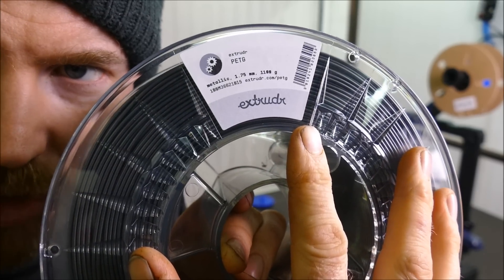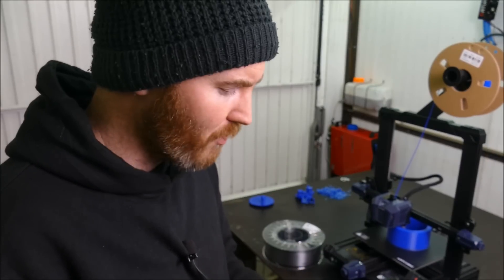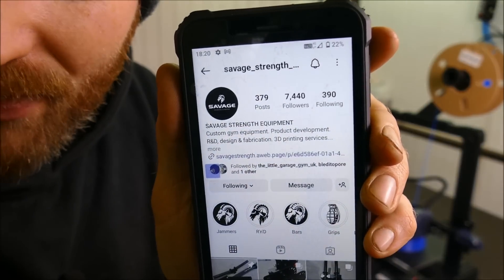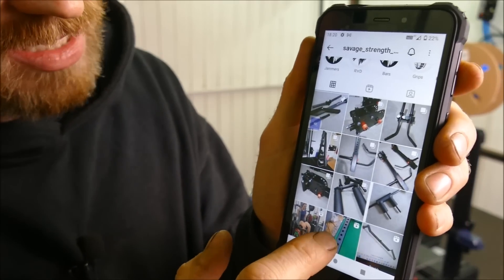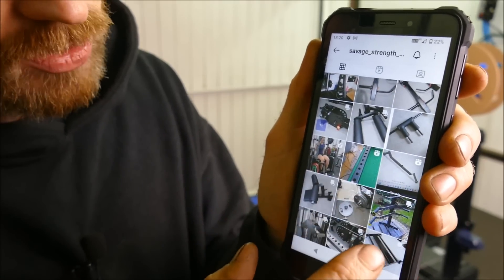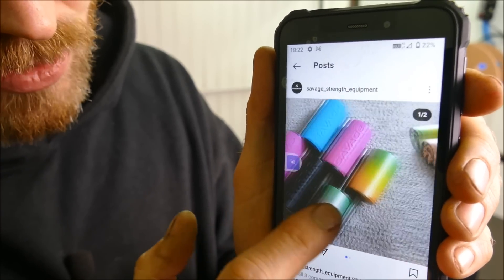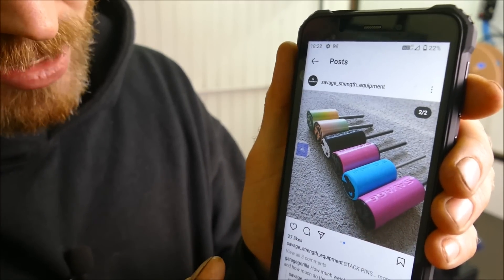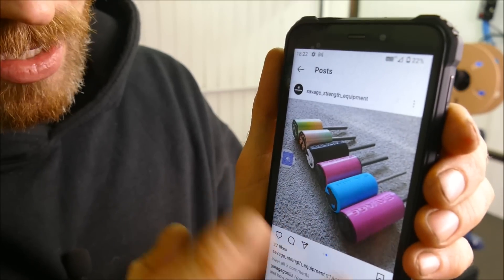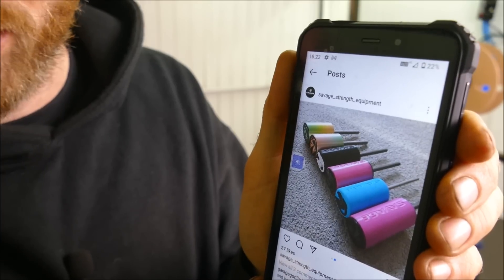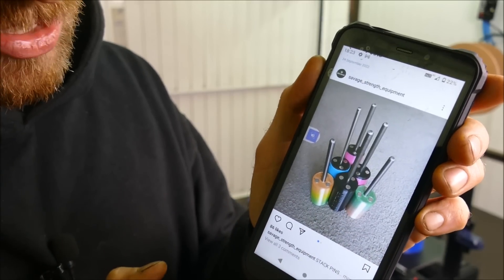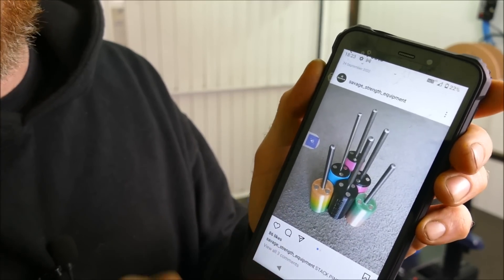It's an Australian company called Extrudr. I'm not sponsored by Extrudr at all. It was recommended to me by a friend, Billy from Savage Strength Equipment. He's a very talented one-man band manufacturer making gym equipment. Billy very cleverly uses 3D printers within his manufacturing process and achieves things that otherwise would have to be injection molded. I'll leave a link to his page in the description, but very inspiring and well worth looking at.